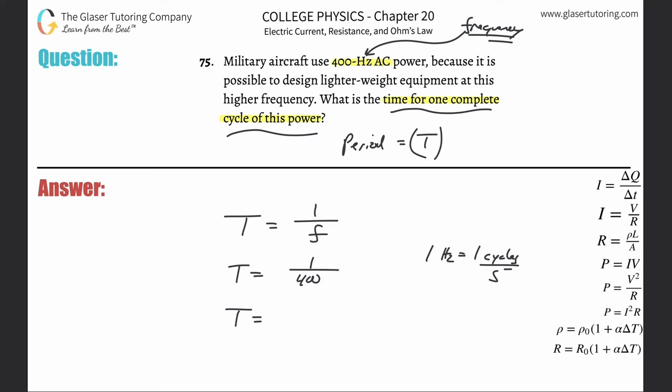Anyway, one over 400. What do we get? I did one over 4,000. So 0.0025 or 2.5 times 10 to the 1, 2, 3 minus 3. All right, so that's seconds. That's how long it will take to complete one cycle.